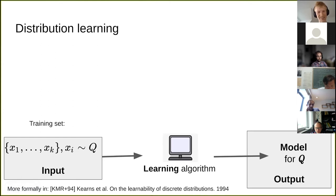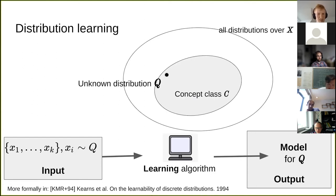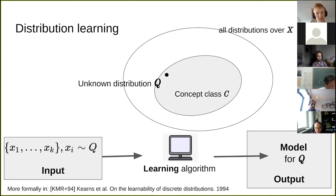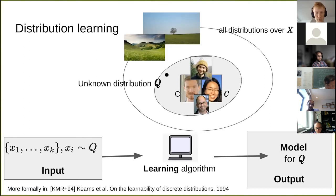One ingredient missing in our formal setting is the concept class — just a subset of the set of all distributions. The learning algorithm is promised that the unknown distribution Q belongs to this concept class. Usually the distributions in the concept class have some structure in common that the learning algorithm can exploit to make learning feasible. For example, a concept class might contain all distributions over facial images, and the algorithm is tailored to exploit that it will only ever see images of faces.